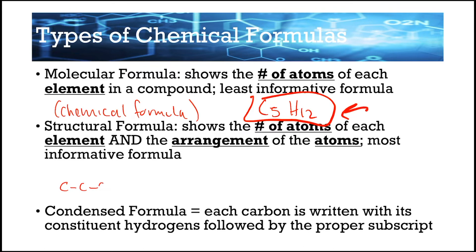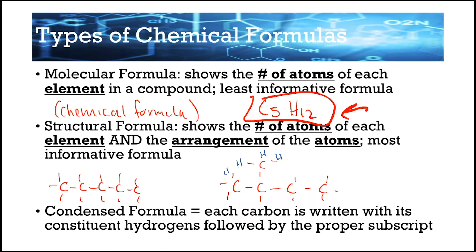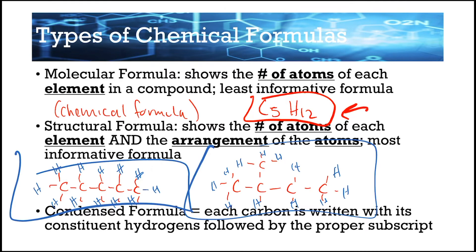Structural formulas show the number of atoms of each element and the arrangement of the atoms — this is super informative. You can have five carbons and a certain number of other elements, but the way they are arranged can differ. In person we have physical carbon models — little balls you can arrange together — but here, as you can see in the picture, each compound has five carbons and twelve H's but they look different and have different names.